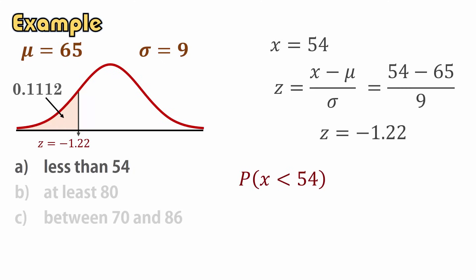Therefore, the probability that x is less than 54 is the probability that z is less than negative 1.22, which gives 0.1112, or 11.12%.